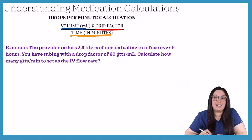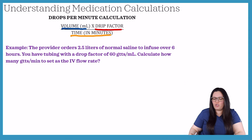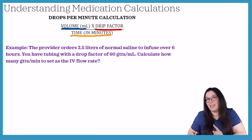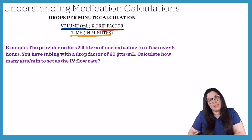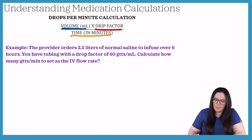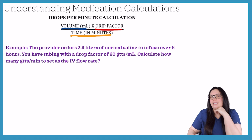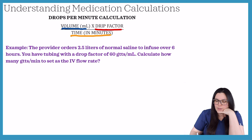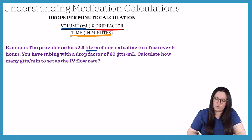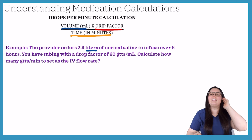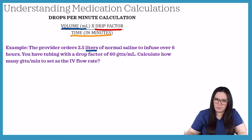Our final question asks: the provider orders 2.5 liters of normal saline to infuse over six hours. You have tubing with a drop factor of 60. Calculate how many drops per minute to set as the IV flow rate. To begin, we already know that we have liters instead of milliliters, so we have to convert liters to milliliters to use the drops per minute calculation.